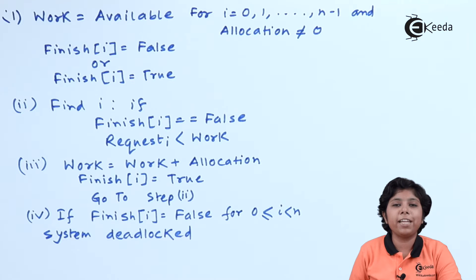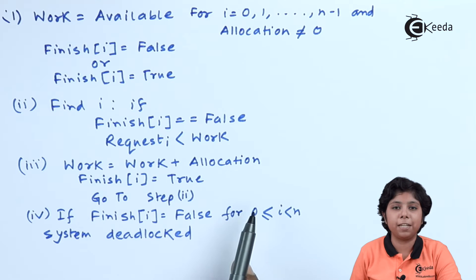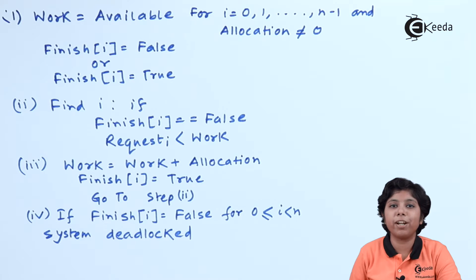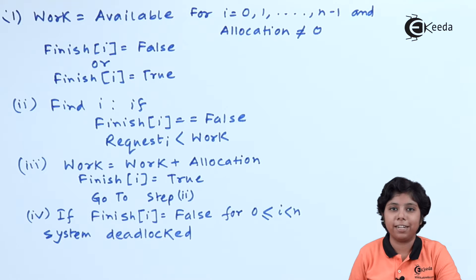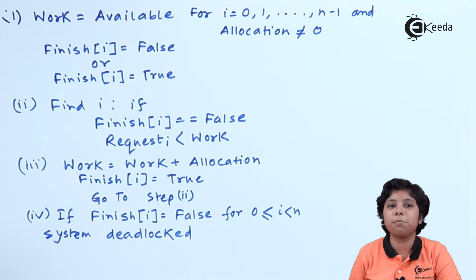In step 4, if finish[i] equals false for any process in the system, that means the process is waiting for resources that need to be released by some other process. The system is then in a deadlock state. If finish[i] equals false for any process, the system is in deadlock.